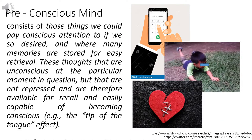The pre-conscious mind consists of those things we could pay conscious attention to if we so desired, and where many memories are stored for easy retrieval. These are thoughts that are not conscious at a particular moment, but that are not repressed, and are therefore available for recall and easily capable of becoming conscious.